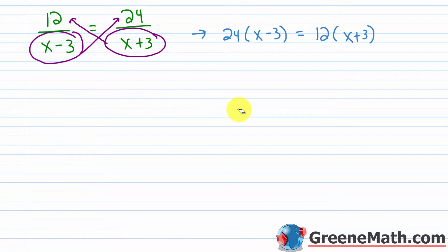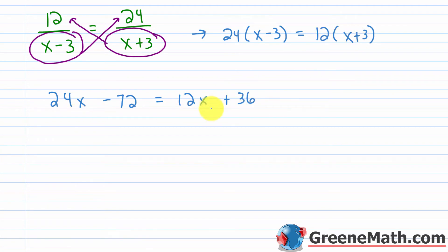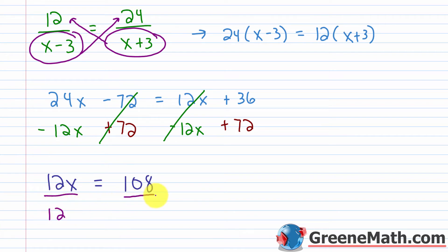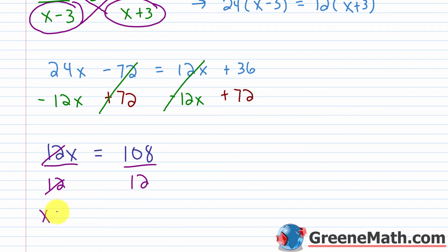Expanding: 24 times x is 24x, and 24 times negative 3 is negative 72. On the right side, 12 times x is 12x and 12 times 3 is 36. So we have 24x minus 72 equals 12x plus 36. Adding 72 to both sides and subtracting 12x from both sides gives 12x equals 108. Dividing both sides by 12, x equals 9.